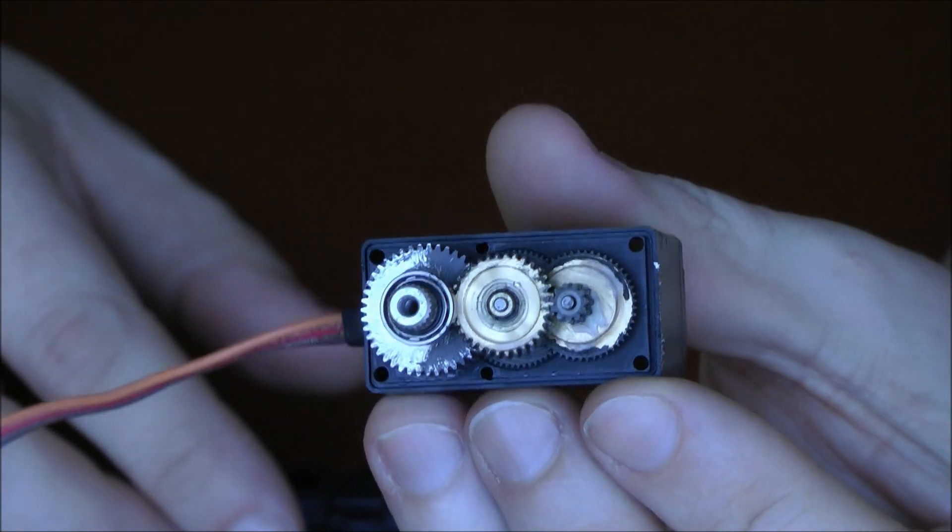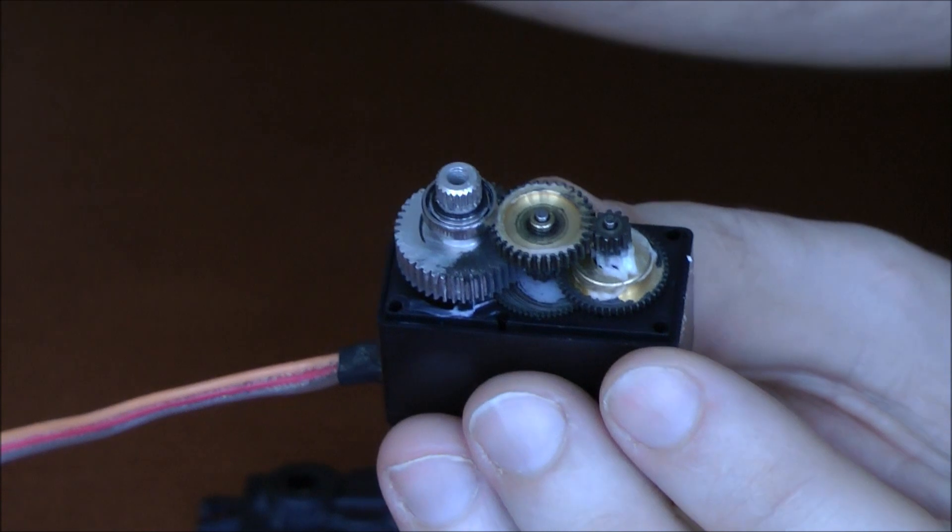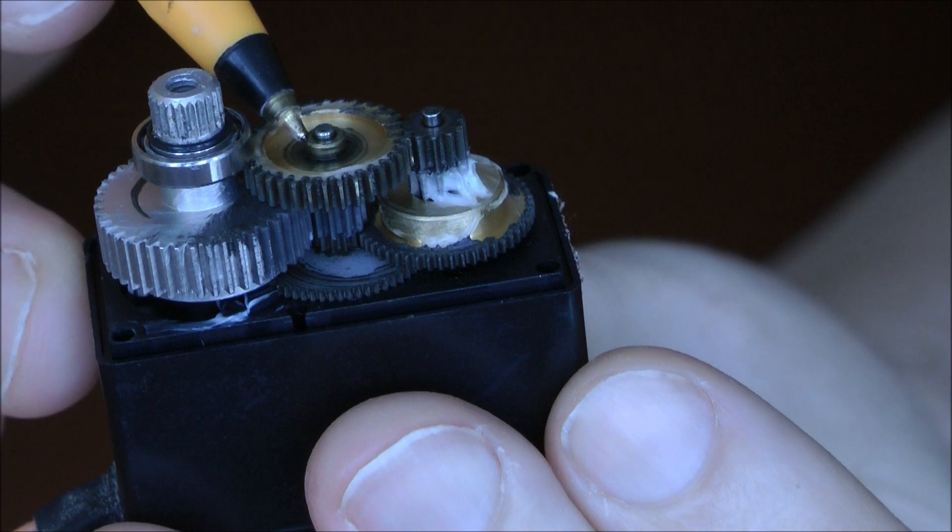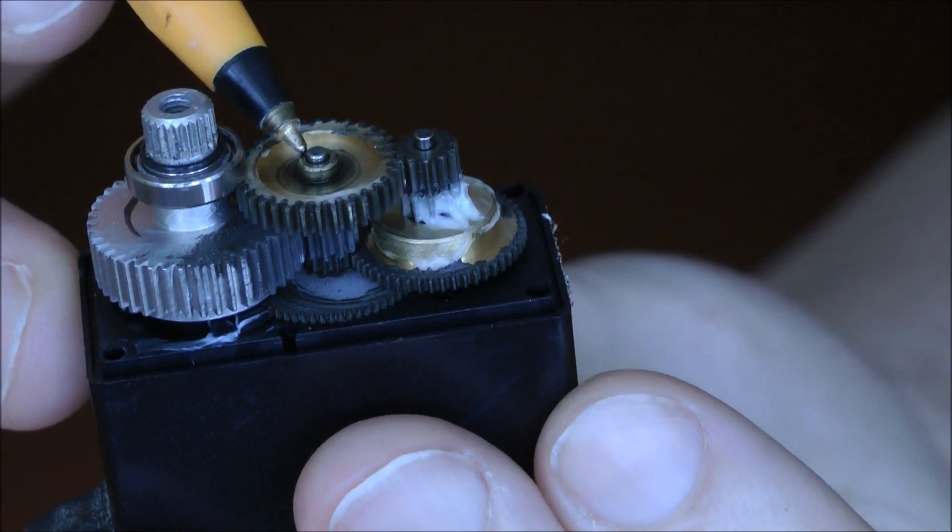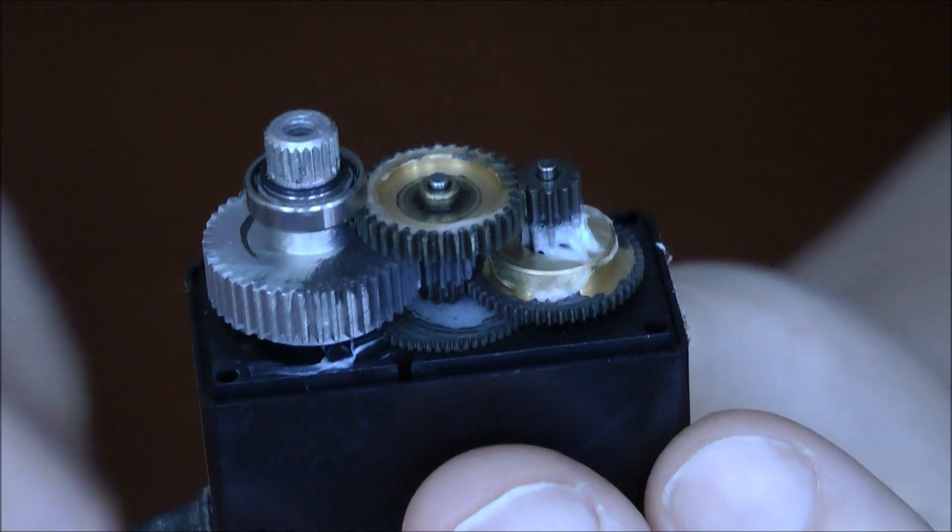It's visually ok, but something is really wrong. This bushing is not supposed to be here. It's supposed to be on the top case of the servo.